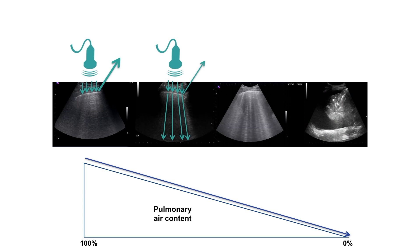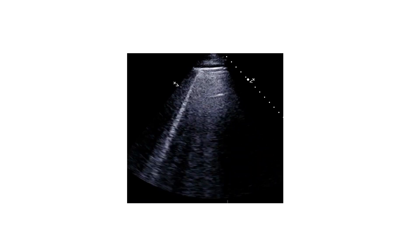And what we visualize are the B-Lines, which are hyperechoic, vertical lines arising from the pleural line, moving synchronously with respiration — in case there is sliding — and extending to the bottom or almost to the bottom of the screen.